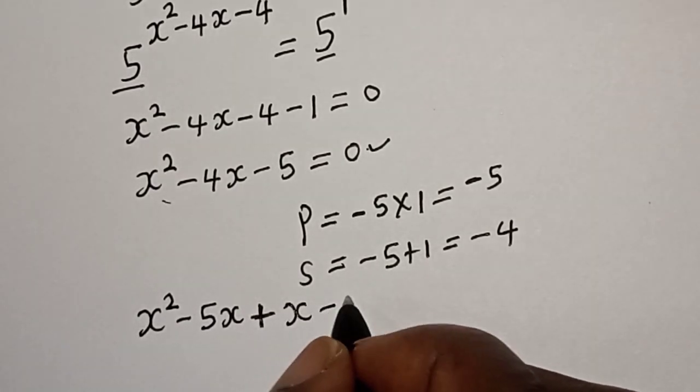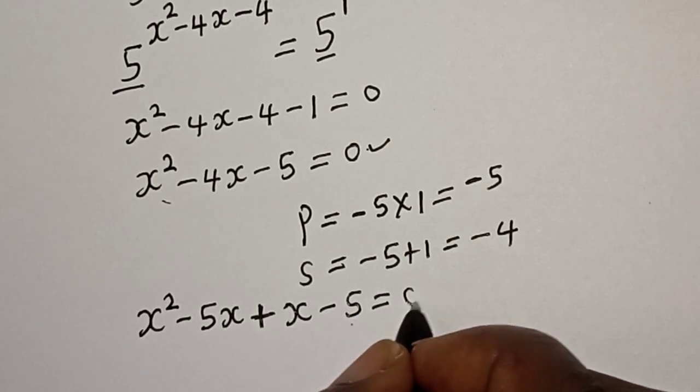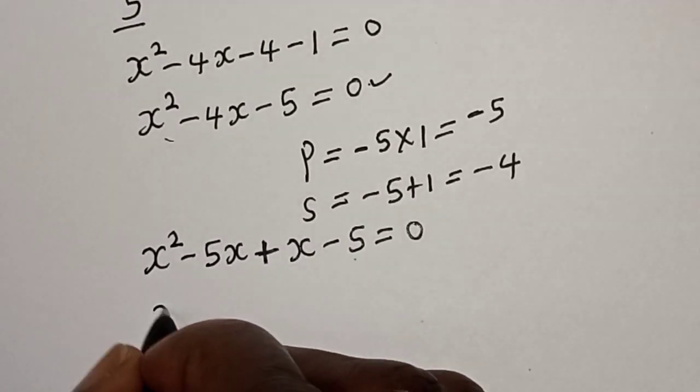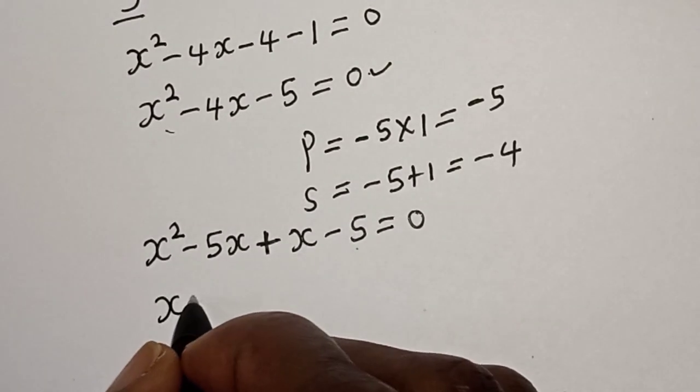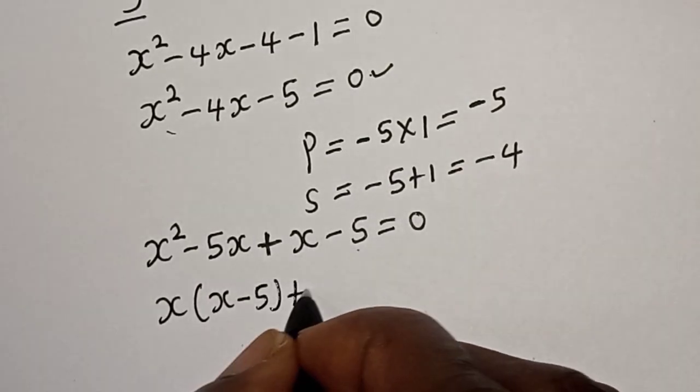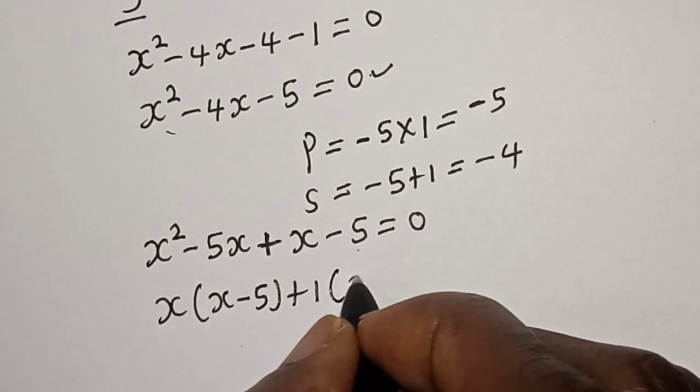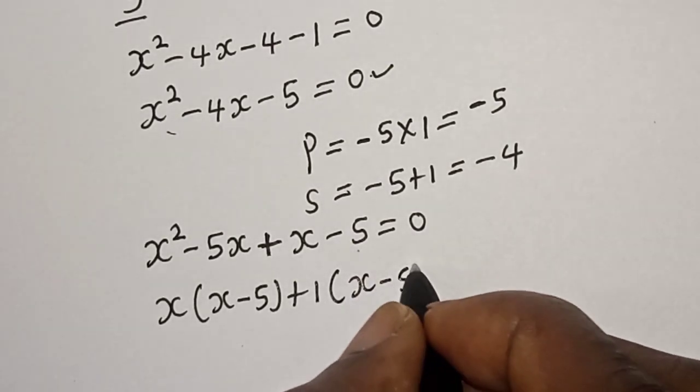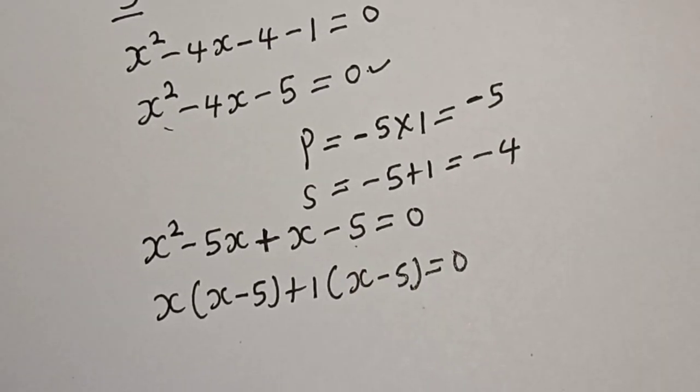Minus 5 plus 1 bracket s minus 5, plus 1 bracket s minus 5 is equal to 0.